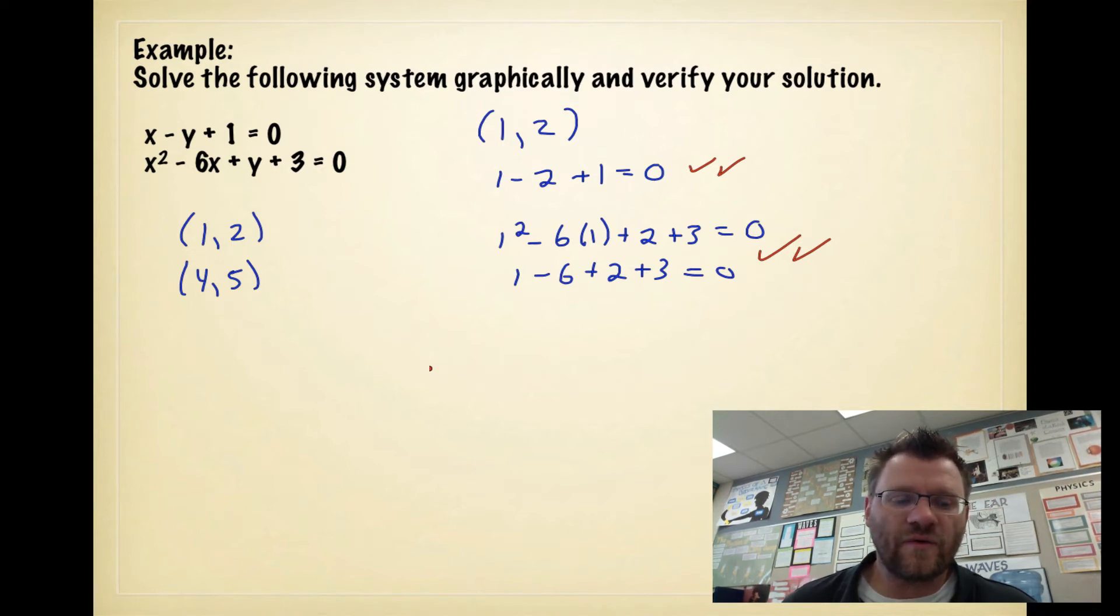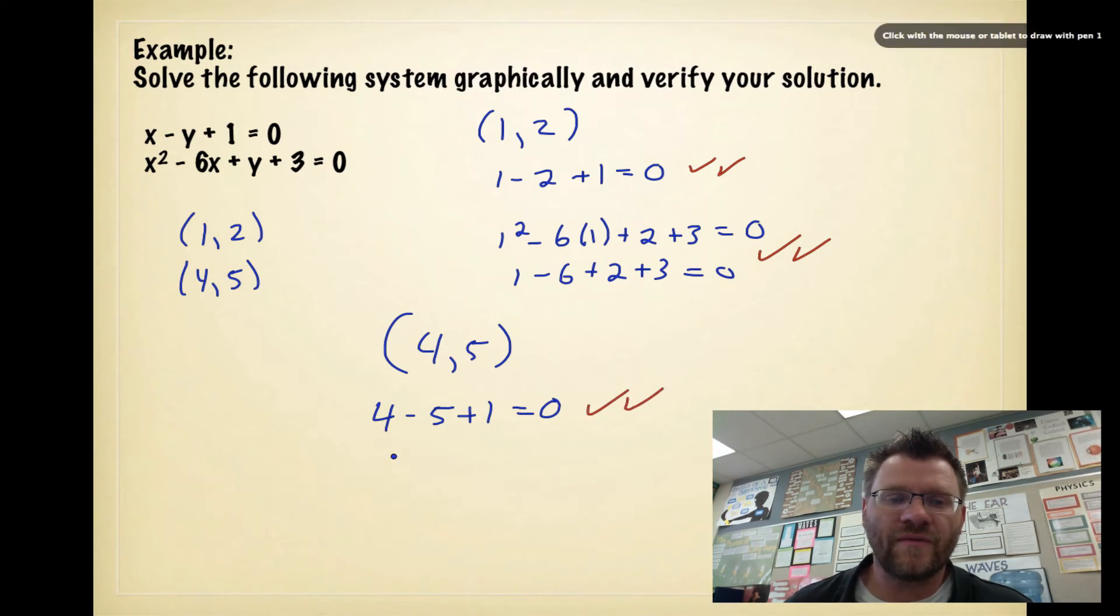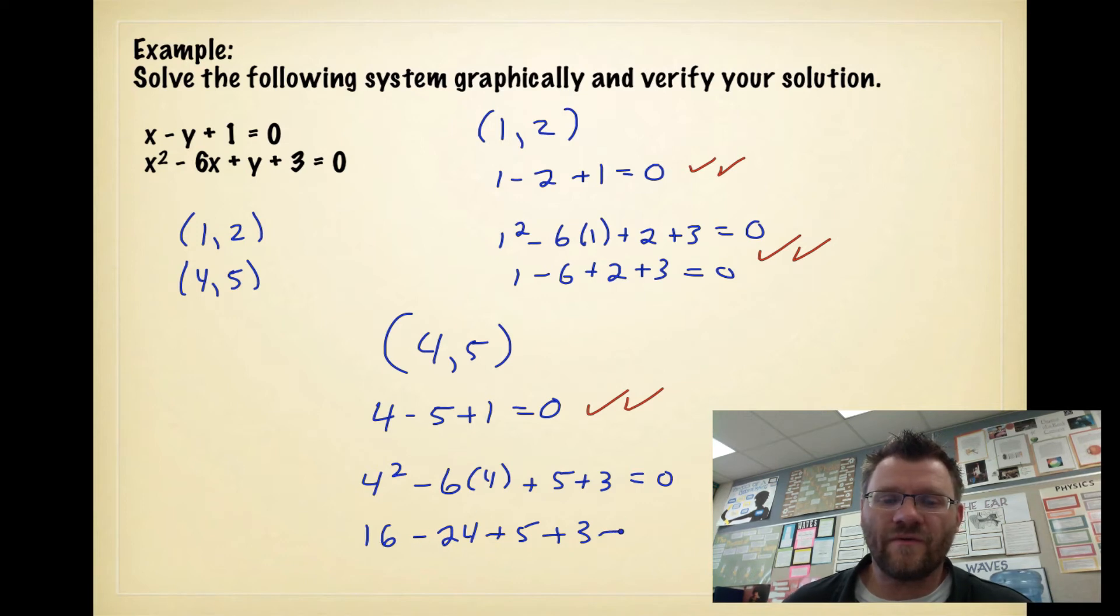The other answer is 4, 5. So I need to plug that in. I get 4 minus 5 plus 1 equals 0. And that's true. So that checks out. And then I get 4 squared minus 6 times 4 plus 5 plus 3 equals 0. And that is 16 minus 24 plus 5 plus 3. 5 plus 3 is 8. 8 plus 16 is 24. Minus 24 does equal 0. So that is how you verify your answers.